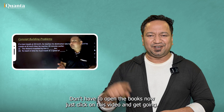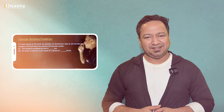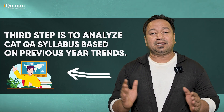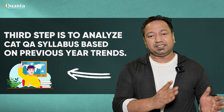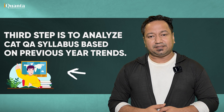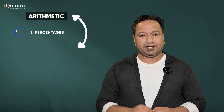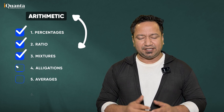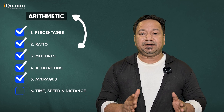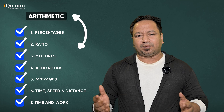The third step is to analyze the CAT QA syllabus based on previous year trends. For example, Arithmetic, which will be composed of percentages, ratios, mixtures, allegations, averages, time-speed-distance, time and work, and other topics.